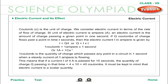Electric current: coulomb is the unit of charge. We consider electric current in terms of the rate of flow of charge. The SI unit of electric current is ampere (A). An electric current is the amount of charge passing a given point in one second. If Q coulombs of charge flows past a point in time t seconds, then the electric current I in amperes is given by: I = Q / t, or Q = I × t.